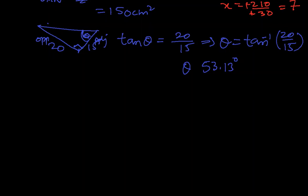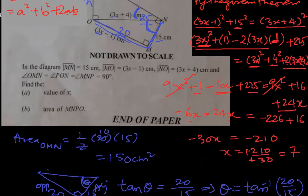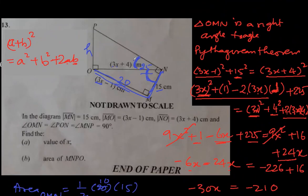This is theta. So if this is 53.13, the angle this one will be 90 minus 53.13 and that will be 36.87 degrees. This angle is 36.87. Now we can find h by again using tan.